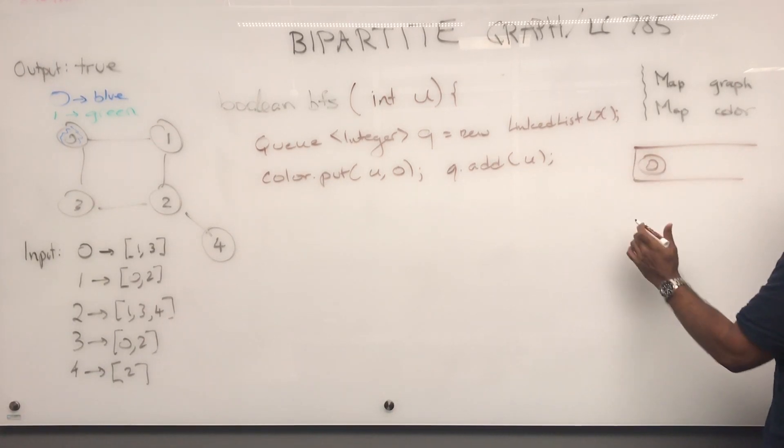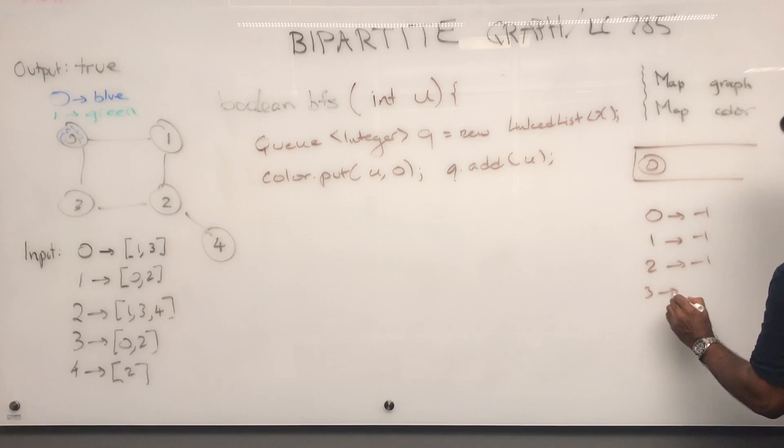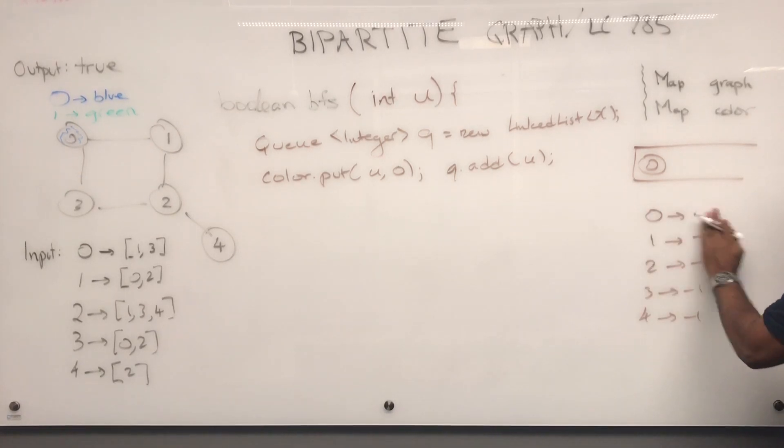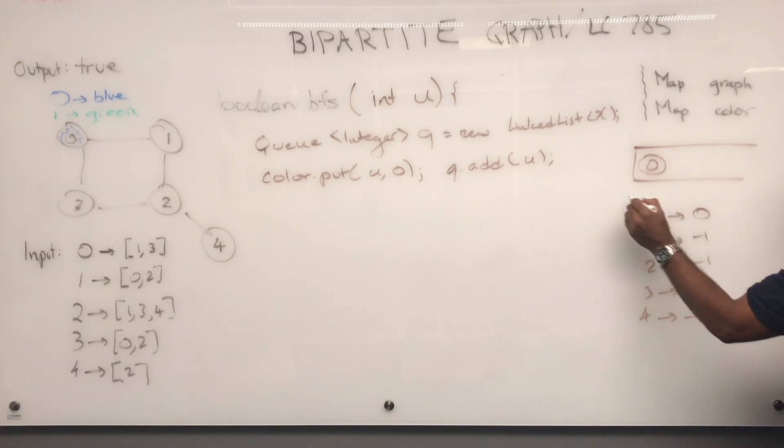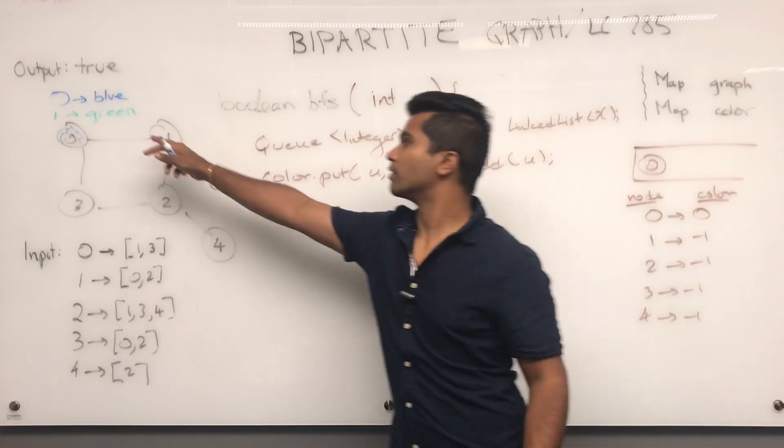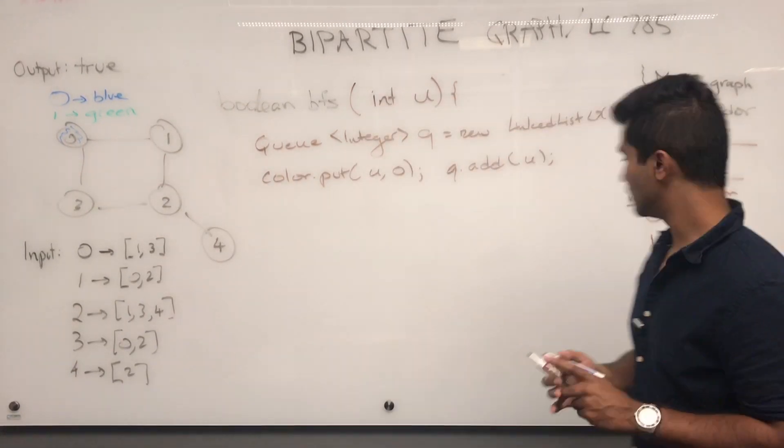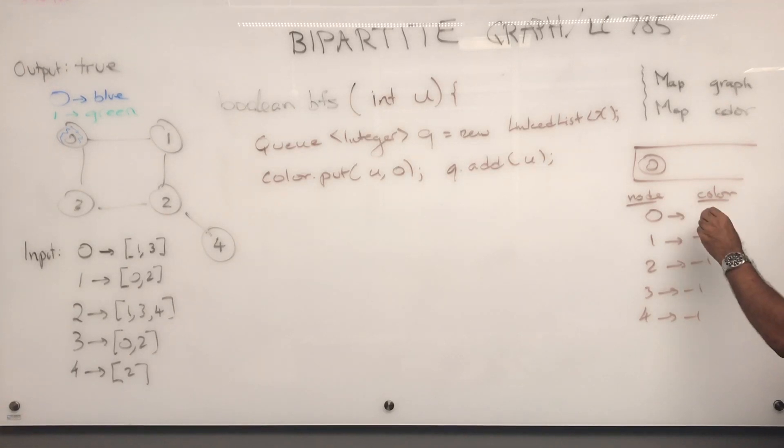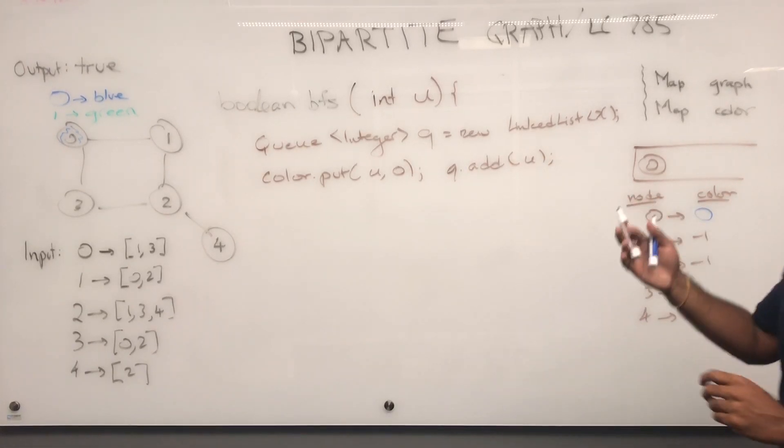Now, what would my queue look like right now? Queue is going to have zero, which is colored as blue. So this is going to be my queue, and then let me actually have my color map as well. Everything in the beginning is negative one. But I changed my color, right? So I'm going to put it as zero. So this is the node, and this is the color. And you can reference the colors here. If it's zero, it's blue. If it's one, it's green.